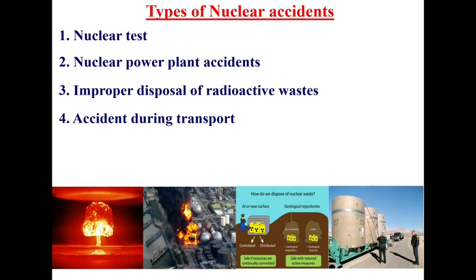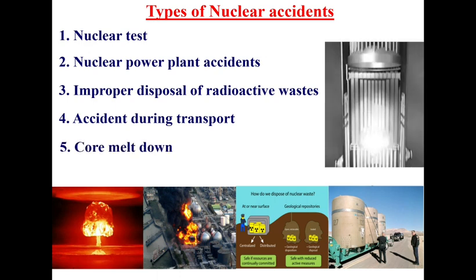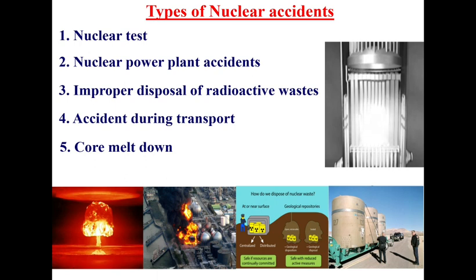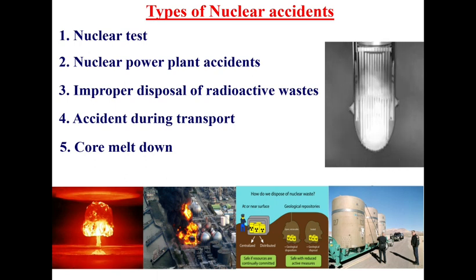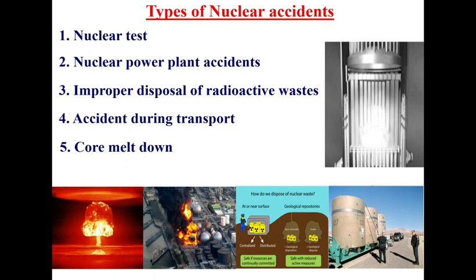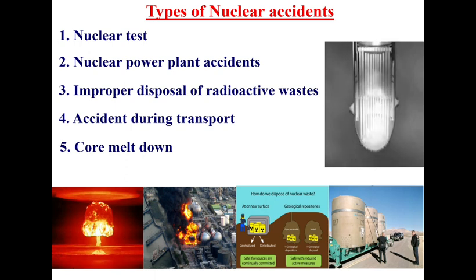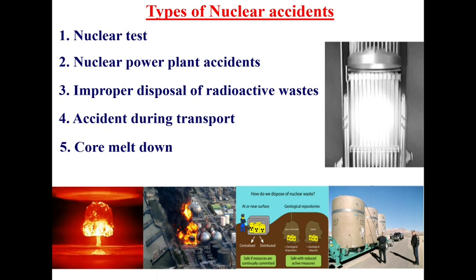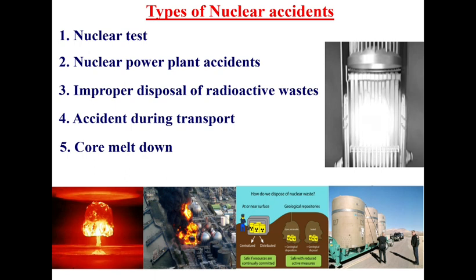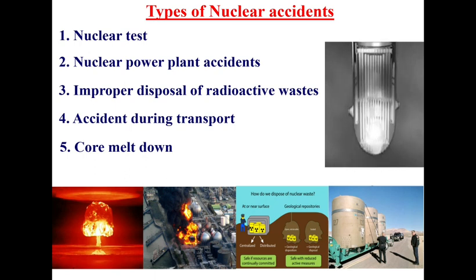The fourth type is accident during transport. Trucks carrying radioactive wastes or fuels involved in an accident will immediately result in radioactive emissions. The fifth type is core meltdown. From this picture, you can see the nuclear core from a nuclear reactor. During enormous heat production in the core, the materials get melted down, causing serious problems and sometimes an explosion. A notable example is the Chernobyl nuclear power plant in Ukraine, which exploded in the year 1986, around 4:20 a.m., causing huge destruction.